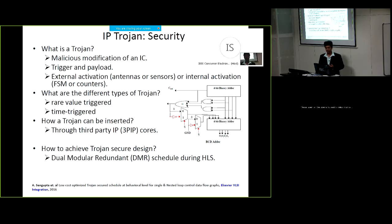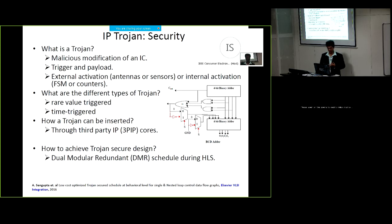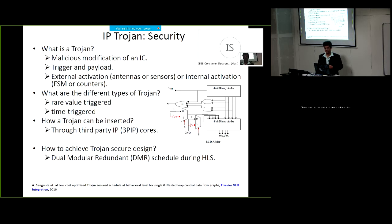Looking at different types of Trojans from the point of view of triggering mechanisms: rare value triggering is where a Trojan is triggered through rare events or rare conditions. Time triggering Trojans are activated after a certain time interval, also called time bomb Trojans, meaning they activate after a particular predefined time interval. These Trojans are inserted in the third-party intellectual property core, and they are mostly done by rogue elements or adversaries without the knowledge of the system integrator.